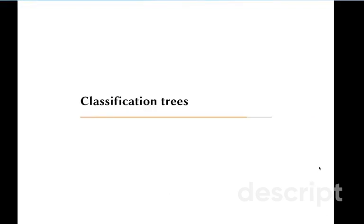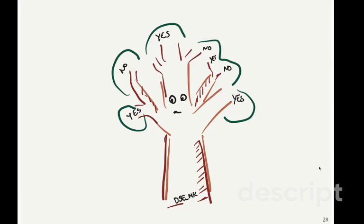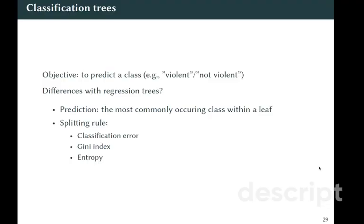So far we've been trying to predict a continuous variable, but what if we want to predict a class? We need to use classification trees. And what is different for classification in comparison to a regression tree? So as it appears you do exactly the same, except for the way you form prediction. You do not use the mean, but you use the most commonly occurring class within a leaf.